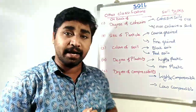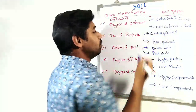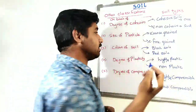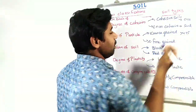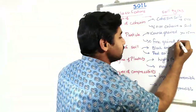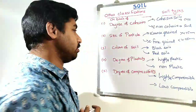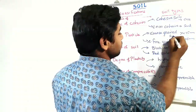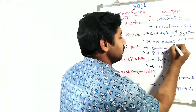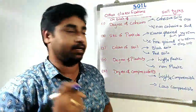Next, classification based on particle size. Based on the particle size of individual soil grains, we can classify soil into coarse-grained and fine-grained soils. If the particle size is more than 4.75 mm, it is referred to as coarse-grained soil — examples include sand and gravel. If the particle size is less than 4.75 mm, they are referred to as fine-grained soils — examples include clay and silt.